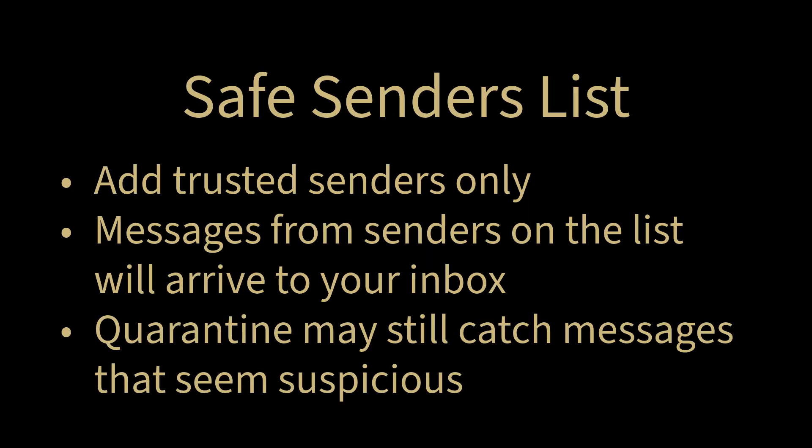Now let's explore how you can control mail routing through your safe senders and block senders lists. When you add an email address to your safe senders list, it acts as a VIP pass for emails from trusted sources. Under most circumstances, messages from these addresses won't be sent to quarantine, ensuring you don't miss any important communications. However, if a sender is using tactics that Microsoft deems suspicious, they may end up in quarantine, especially right after you add them to your safe senders list.